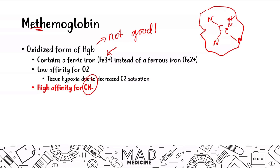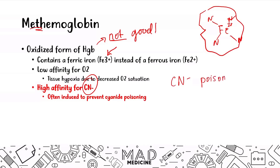Methemoglobin is often deliberately induced to prevent patients from developing cyanide poisoning. In a case of cyanide poisoning, you actually want to induce methemoglobinemia because it will bind to cyanide and inactivate it, allowing oxygen to get back to the tissues and preventing cyanide poisoning from causing further harm.